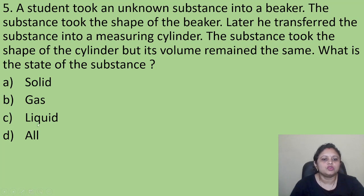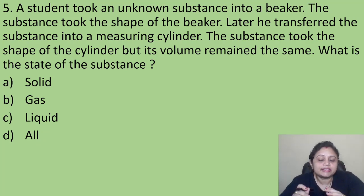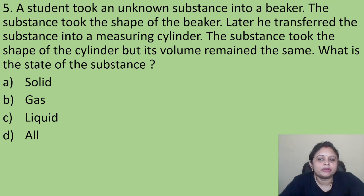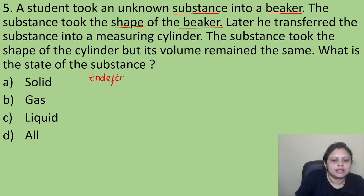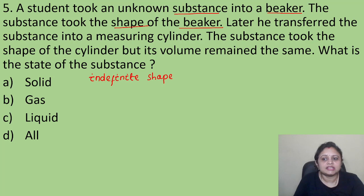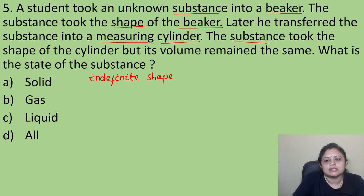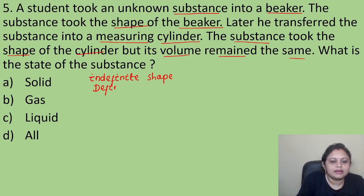Coming to the next question: a student took an unknown substance into a beaker. The substance took the shape of the beaker. Later, he transferred the substance into a measuring cylinder. The substance took the shape of the cylinder, but its volume remained the same. What is the state of the substance? The substance is taking the shape of the container, meaning it has indefinite shape — it does not possess a fixed shape. When transferred, the volume remains the same.